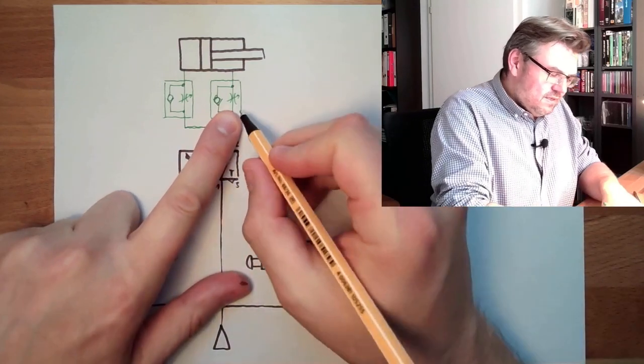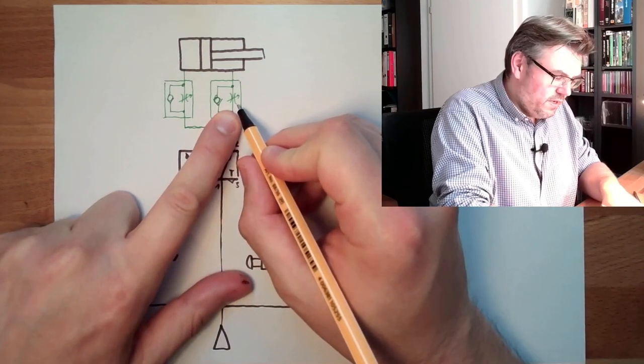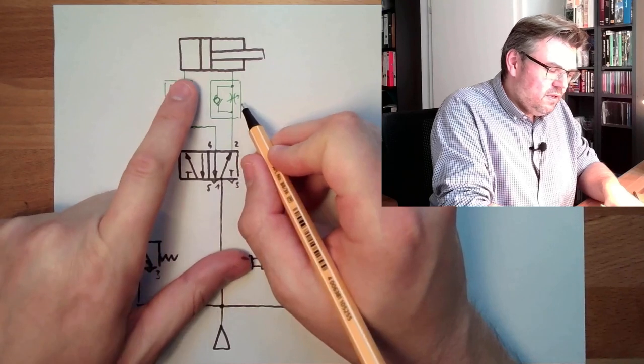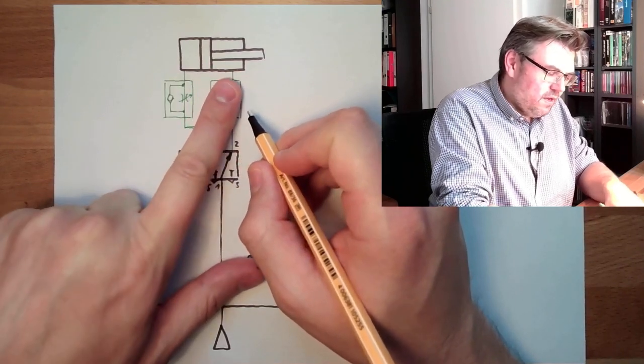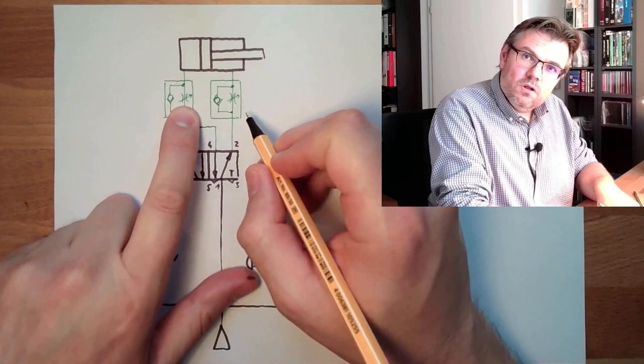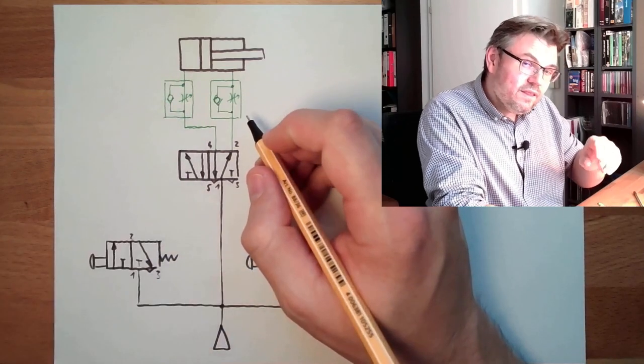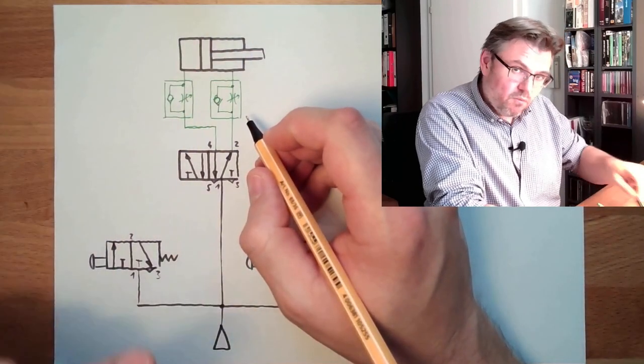So with this throttle actually, I am adjusting the speed of the outgoing speed, and the inward speed I'm adjusting with this throttle. Because I am throttling the exhaust air which is coming from the cylinder.